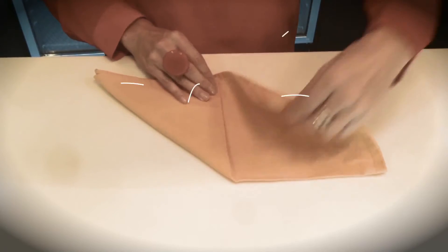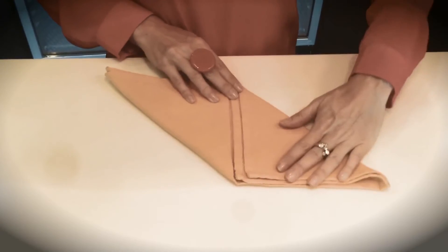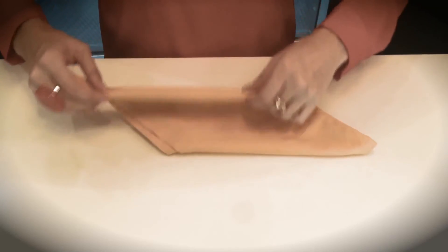Take the other side and fold it up, forming another triangle. Turn it around, flip over your napkin.